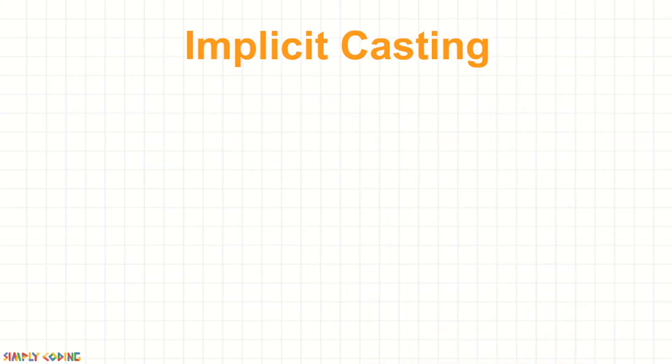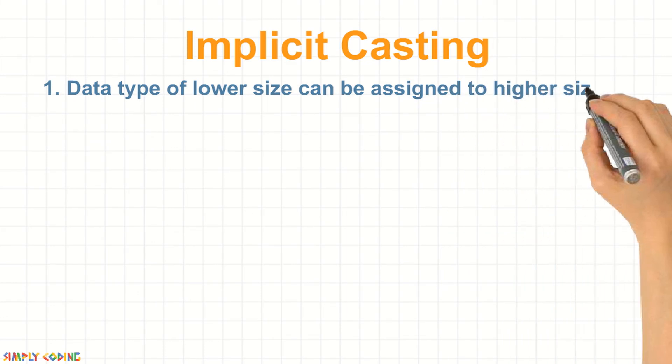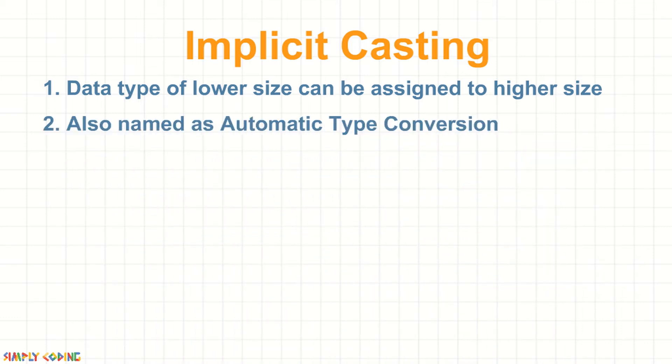A data type of lower size, that means occupying less memory, can be assigned to a data type of higher size. This is done implicitly by JVM so is called implicit casting. The lower size is widened to the higher size. This is also named as automatic type conversion.